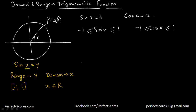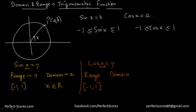Now let's find the same thing for the function cosine. Let's suppose cosine of x equals y. In that case, the range of this function is again going to be from negative 1 all the way to 1. And the domain — what all values x can take — that would be any real number. So that is the domain and range for sine x and cosine x.